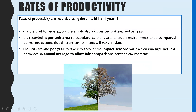When comparing how productive two different ecosystems are, there are three components to the units you would use in your calculation. You could be asked for two marks to state appropriate units or justify all components. The units are kilojoules per hectare — or per metre squared — per year.